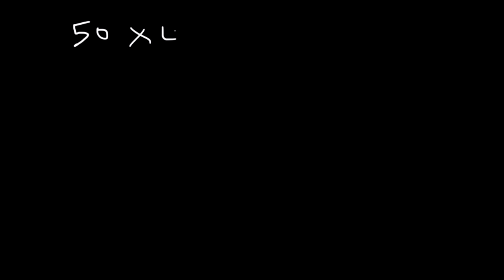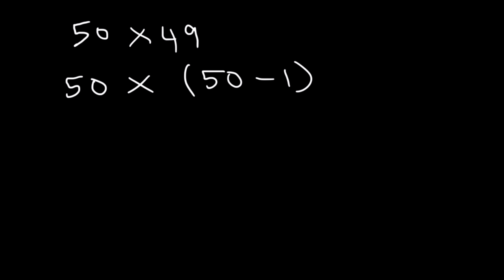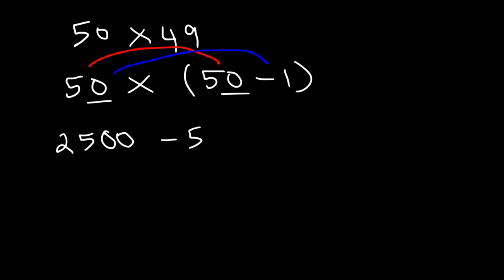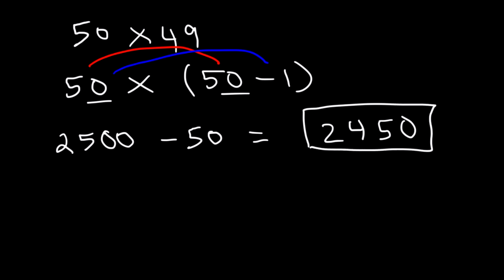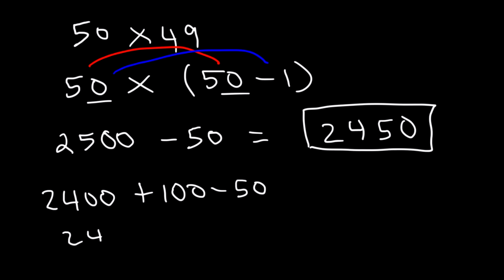Now, what is 50 times 49? You don't want to add 49 fifty-dollar amounts — that takes too long. Instead, replace 49 with 50 minus 1 and distribute. 50 times 50: 5 times 5 is 25, add two zeros, so that's 2500. 50 times negative 1 is negative 50. 2500 minus 50: break 2500 into 2400 plus 100. 100 minus 50 is 50. So 2400 plus 50 is 2450. That's 50 times 49.